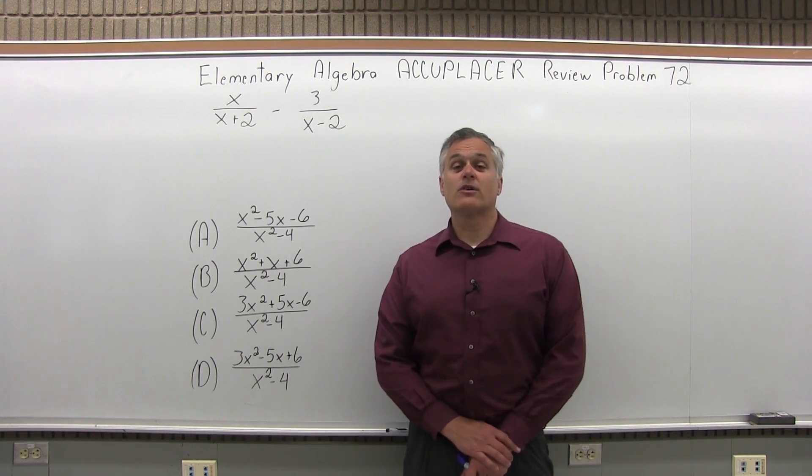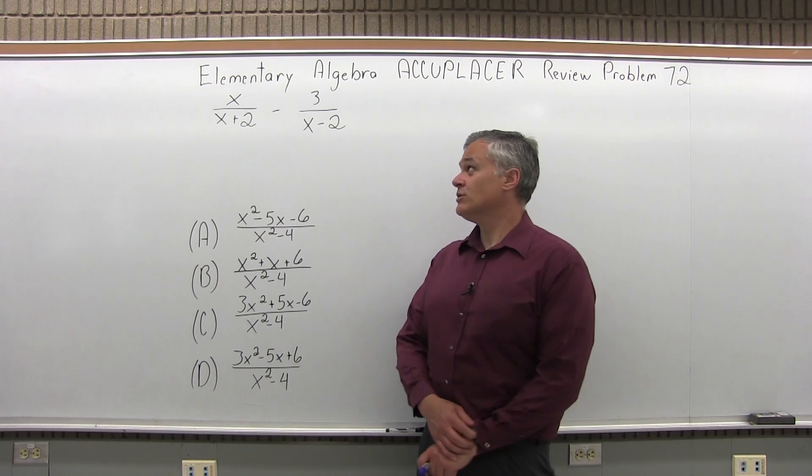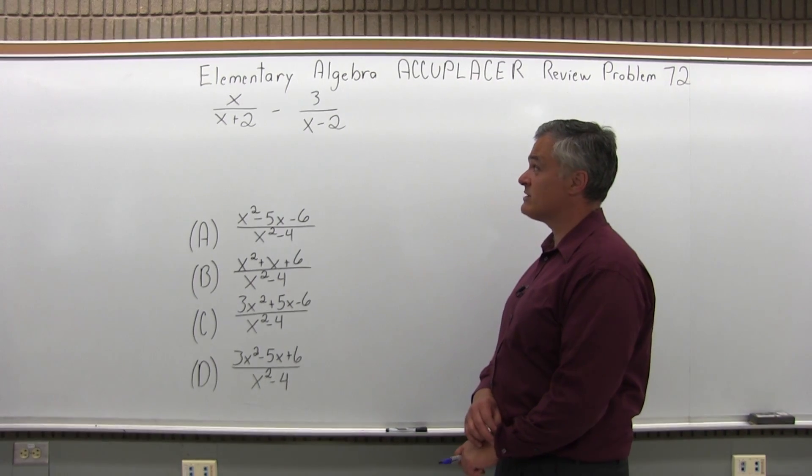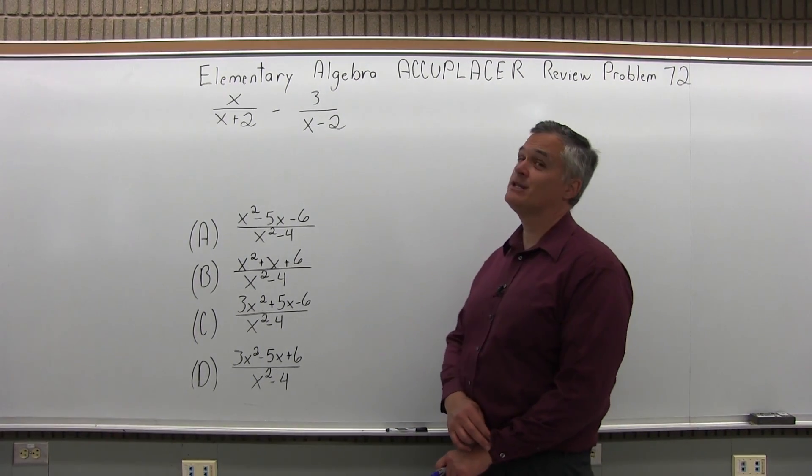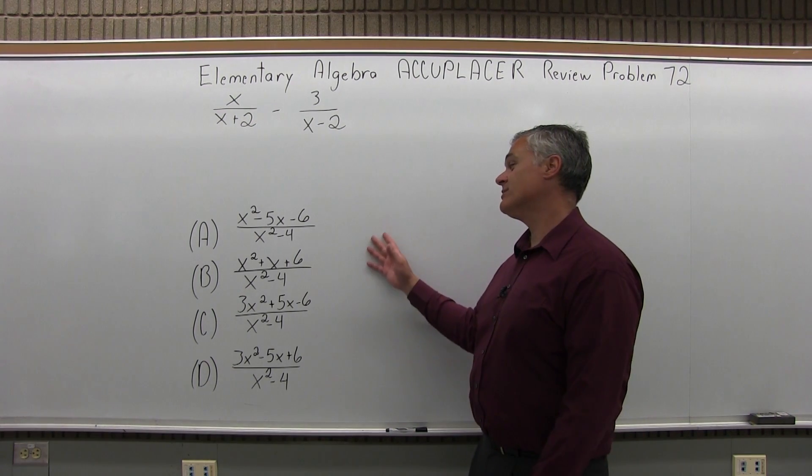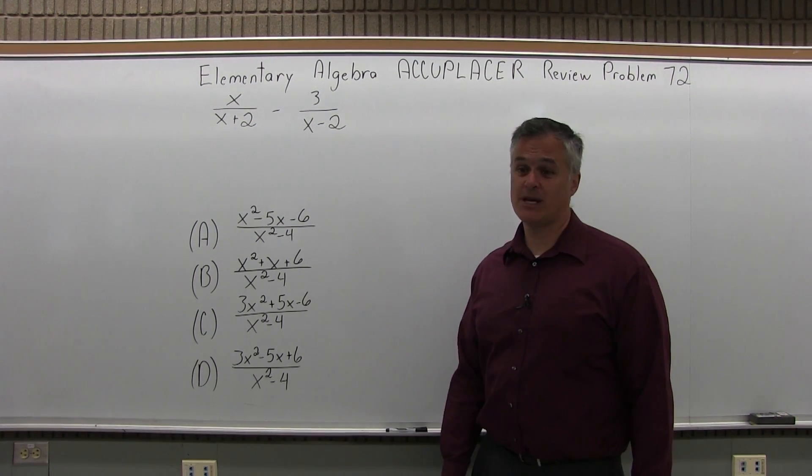This is the Elementary Algebra Accuplacer Review, Problem 72. We have x over x plus 2 minus 3 over x minus 2, and we want to see which one of the four following options it matches up with.